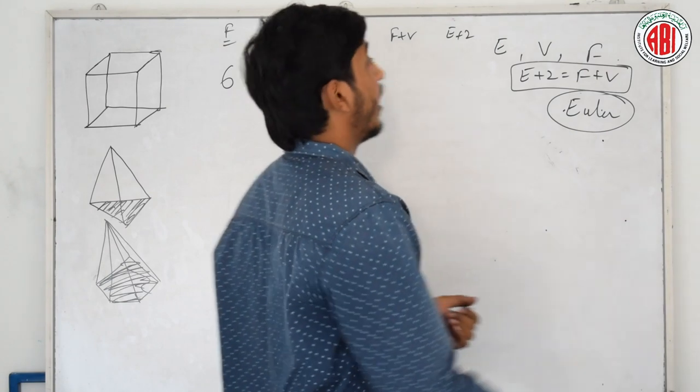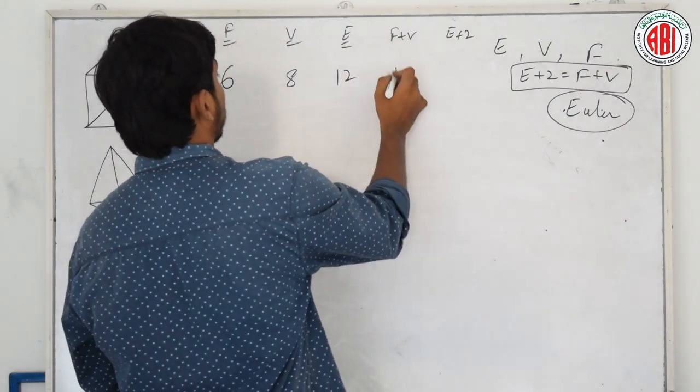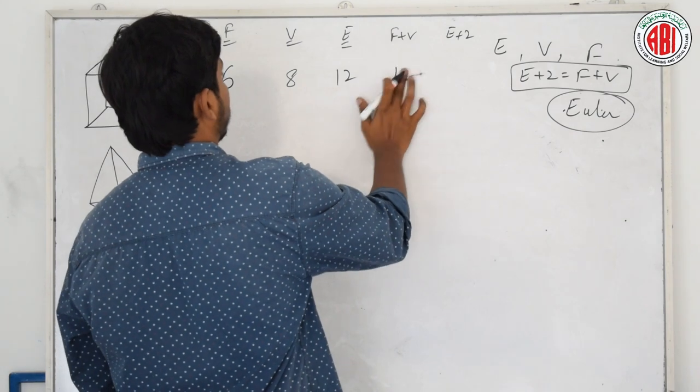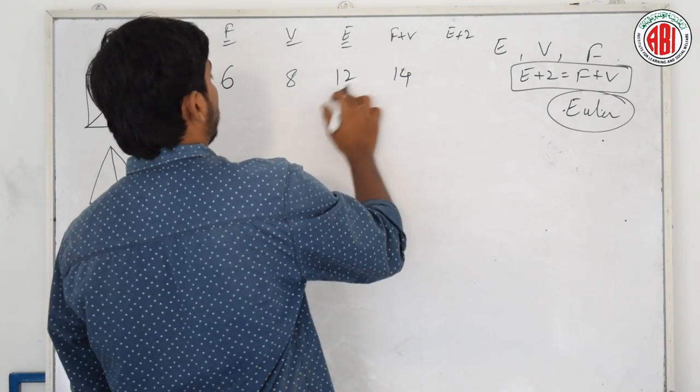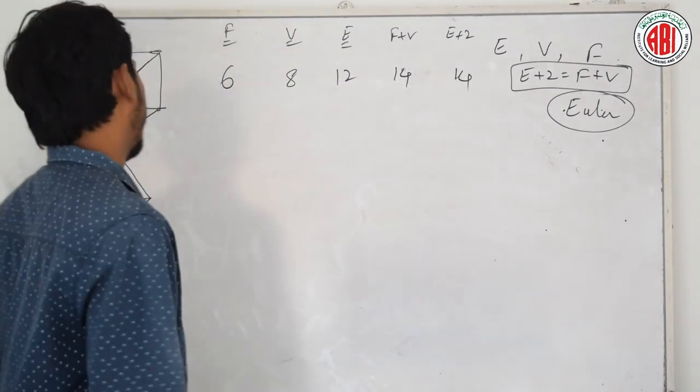Now check. F plus V, 8 plus 6, that is 14. E plus 2, that is also 14. Clear?